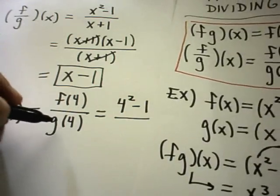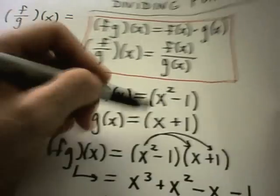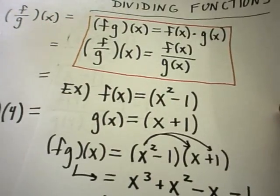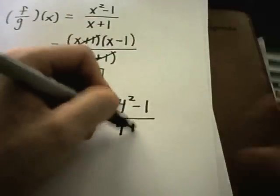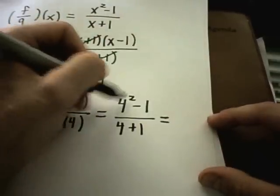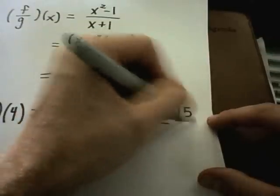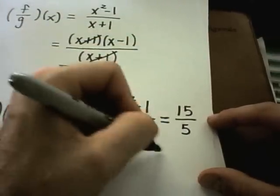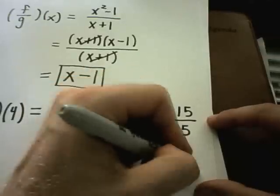And then on the bottom, I'm going to get g of 4. So if I plug 4 into here, I'll get 4 plus 1. So on top I've got 16 minus 1, which is 15. 4 plus 1, which is 5. And if I simplify that down, I'll get 3.